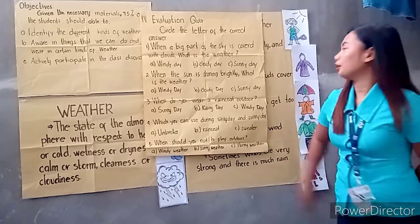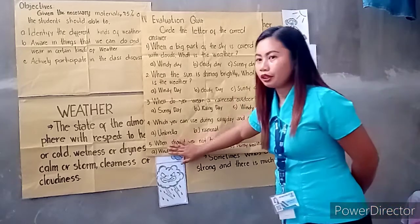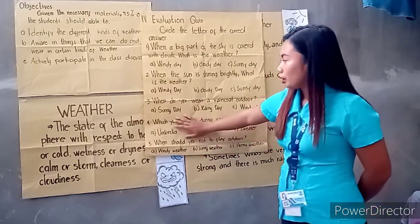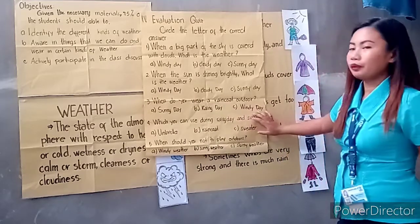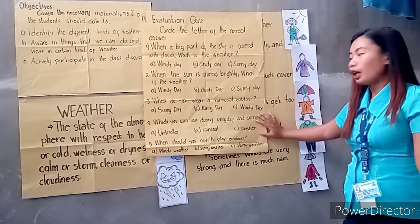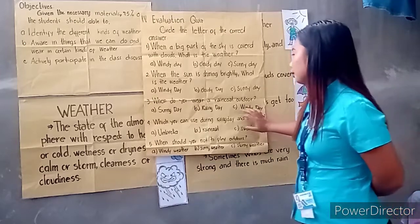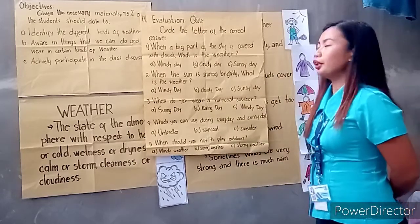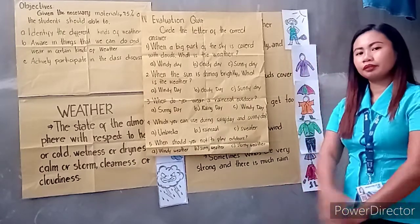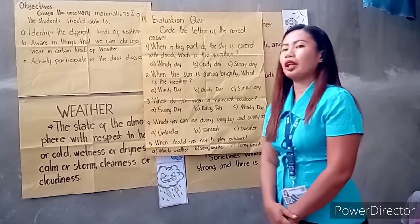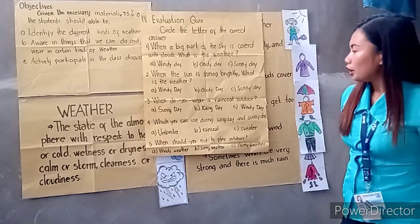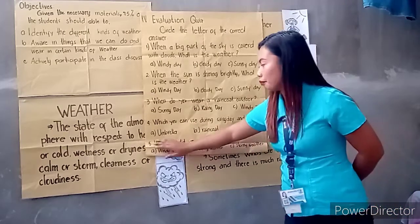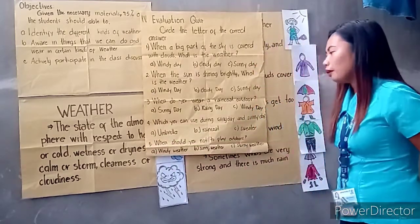Number three, who can read and answer? Okay, Jade. The question is: when do you wear a raincoat outdoors? The correct answer is rainy day, very good! How about number four? Which can you use during a rainy day and a sunny day? The answer is umbrella, very good!